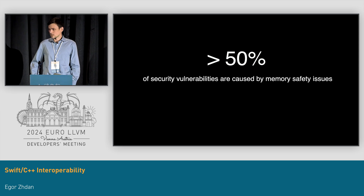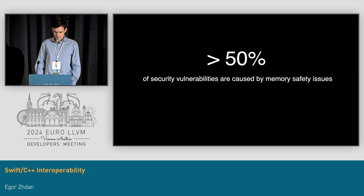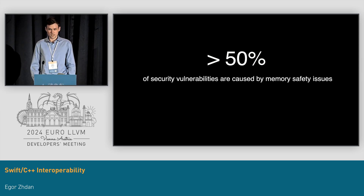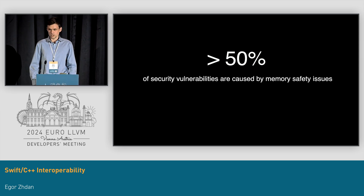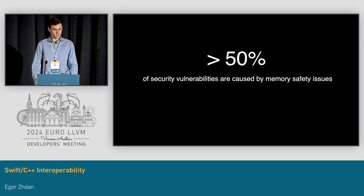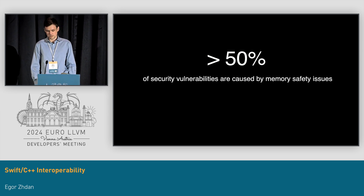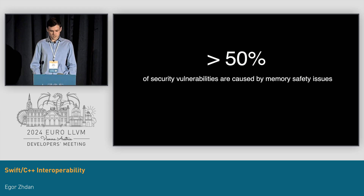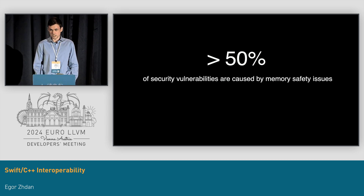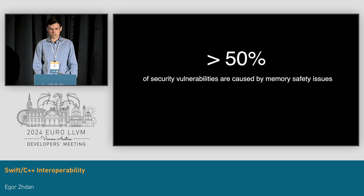I want to start by giving you some numbers. This one might be familiar to a lot of you. According to some research, more than half of exploitable software security vulnerabilities are caused by issues with memory safety. Solving just this single source of vulnerabilities alone would tremendously improve the overall security of the software that we all ship.